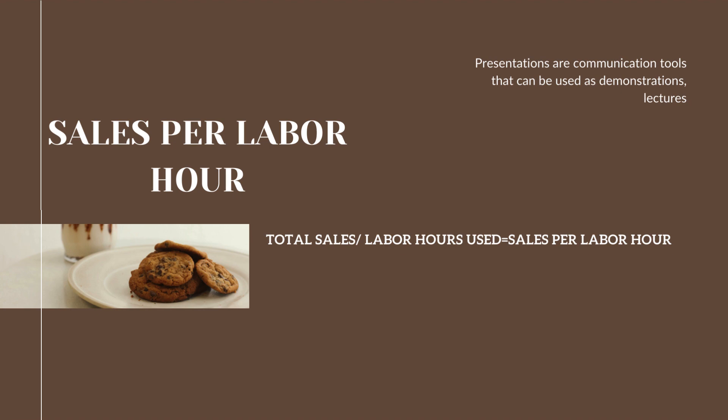We also need to check sales per labor hour — meaning, in one hour, how many staff are working during that time. Whatever sales we have per hour must be compensated accordingly based on your staff schedule. During lean time, it is not a good strategy to have many staff — we need only a few so that we can get a good sales percentage.